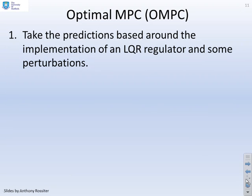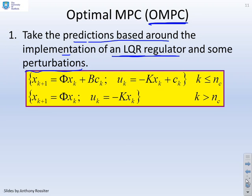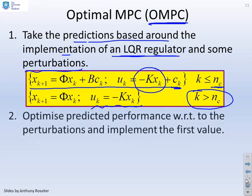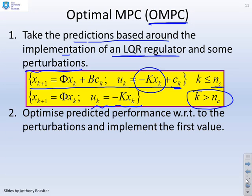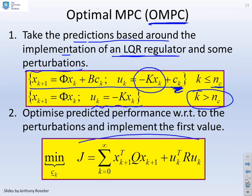What's an optimal MPC algorithm then? We often call this OMPC for short, for optimal MPC. What we're going to do is take the predictions based around the implementation of an LQR regulator and some perturbation terms. You can see the predictions have a dual mode part where for the first n_c steps, you take your state feedback minus Kx_k and add a perturbation term. Beyond that, your control law is your LQR feedback. We're going to optimize our predicted performance with respect to these perturbations c. These are the degrees of freedom we've given ourselves. We're minimizing our infinite horizon performance index, and we're optimizing it with respect to these perturbation terms, this c future term.